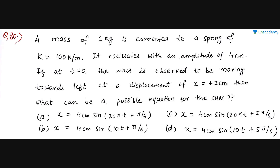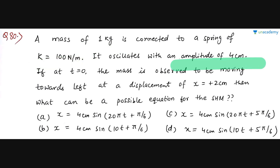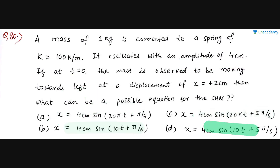The first question: a mass of 7 kg connected to a spring with a given spring constant is oscillating with amplitude 4 cm. At t = 0, x is equal to +2 cm. Which SHM equation correctly describes this motion? Try to solve this question, and now let's see the solution.